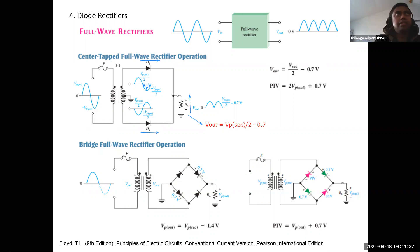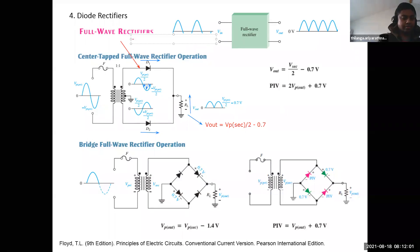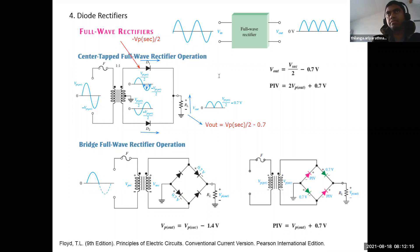Now, what will be the voltage at this point when D1 is not conducting? The voltage is negative VP secondary divided by two.